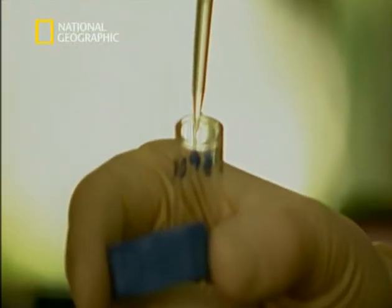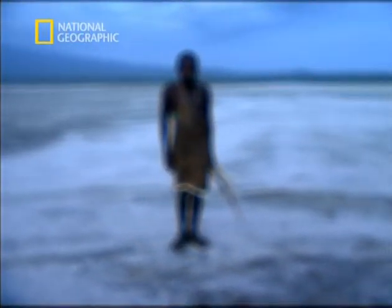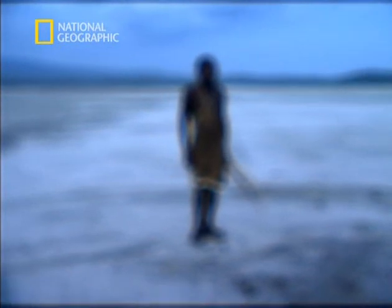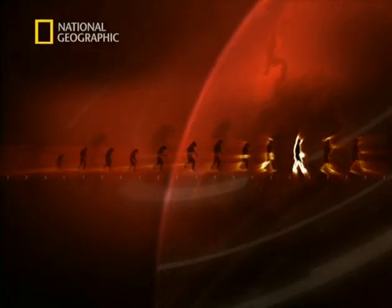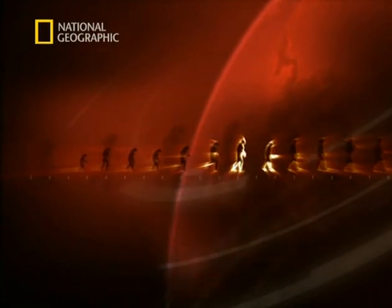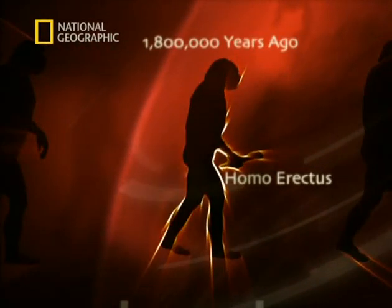Genetics can date the ancient Y chromosome mutations to calculate the age of scientific Adam. Wells believes he was born around 60,000 years ago. It sounds ancient, but it means our search for a common ancestor has not led us all the way back to a time of ape-men, or even to primitive beings like Homo erectus. Compared to the billions of years of human evolution, we found Adam in the recent past.